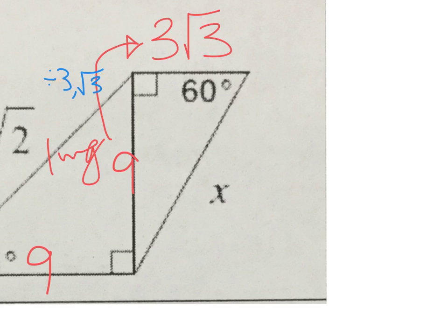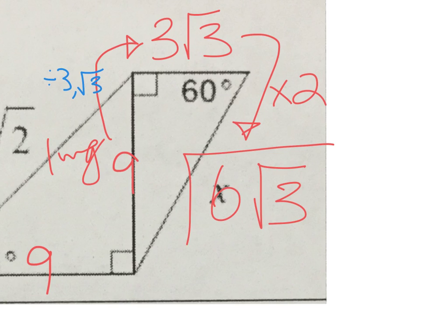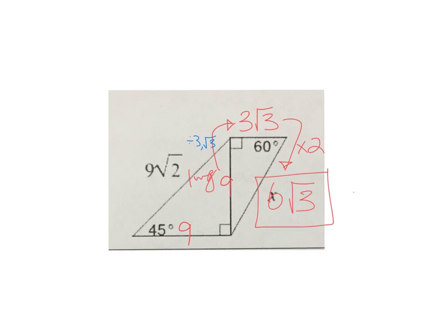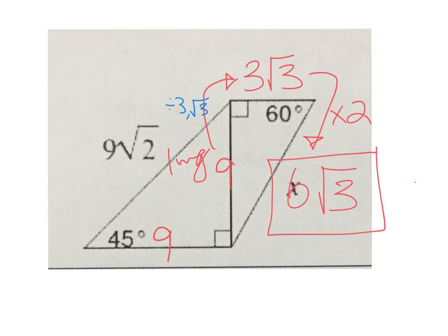That allows me to get the hypotenuse because I can very quickly times this by two and get an answer of 6√3. So you use special right triangles and one leg belongs to two of them, so you have to figure out which one is going on where.